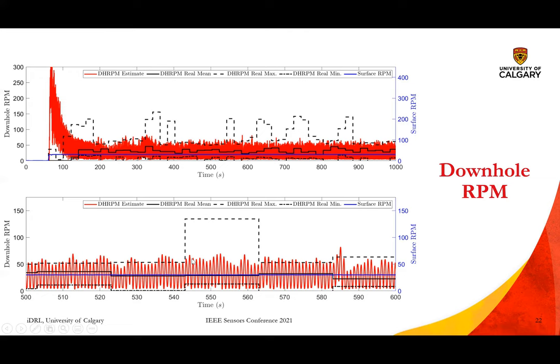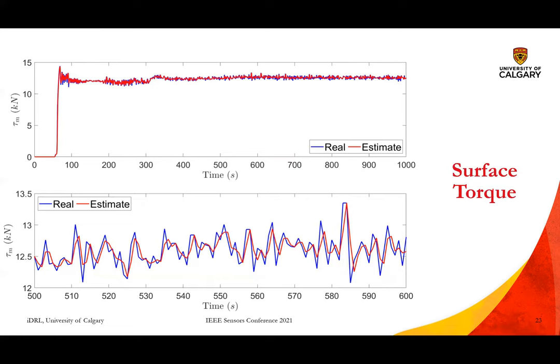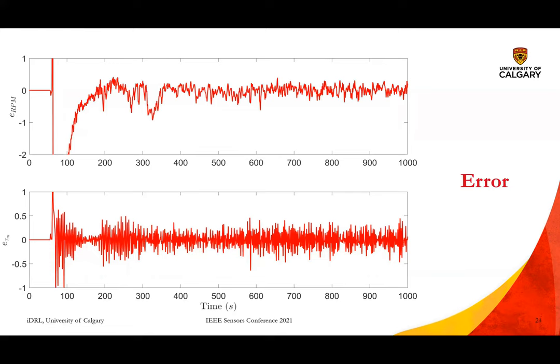The high variation in RPM is essentially the result of stick-slip oscillations. We validate the occurrence of stick-slip oscillations by observing torque variations on the surface. The soft sensor is able to capture the variations in surface torque very clearly, which helps validate the stick-slip oscillations occurring downhole.